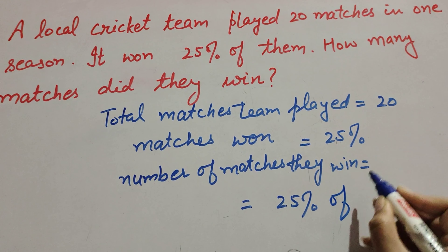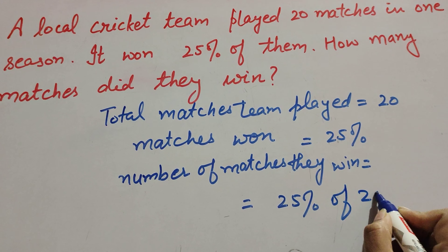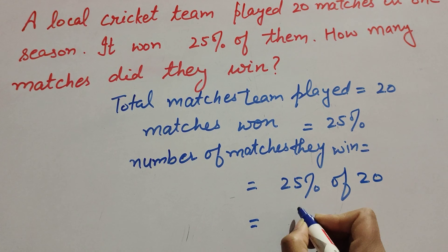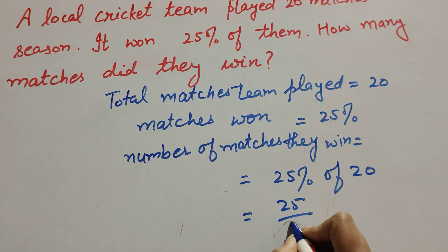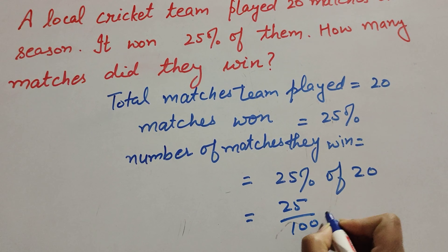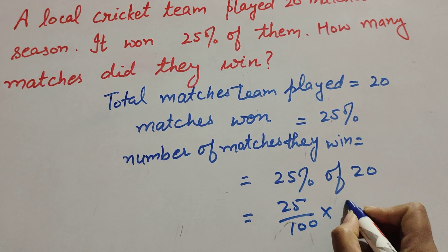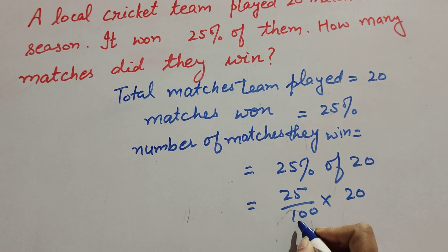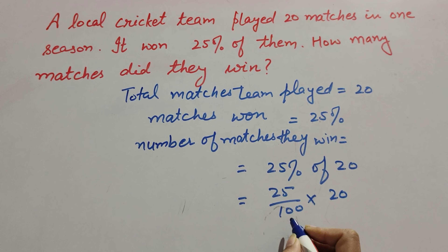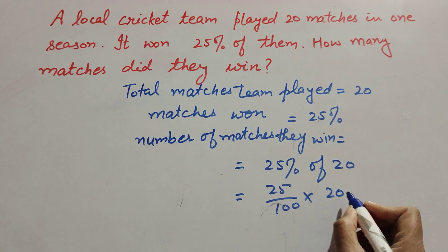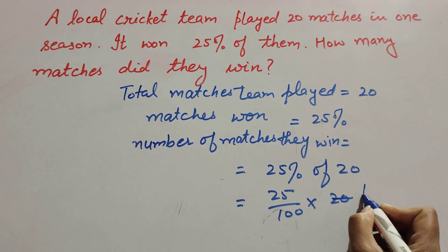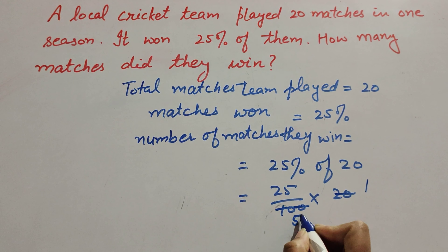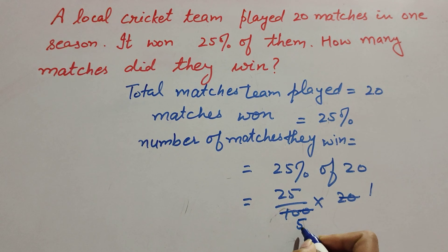So, matches won = 25% of 20. 25% is equal to 25 over 100, and 'of' means multiply, so it becomes 25 over 100 multiplied by 20. Since 20 and 100 are both divisible by 20, we cancel them: 20 ones are 20, 25s are 100.